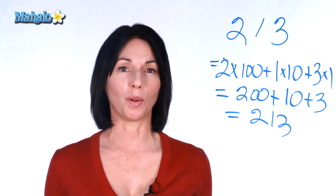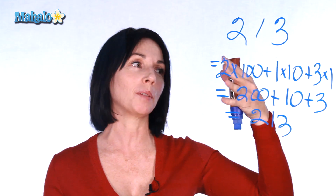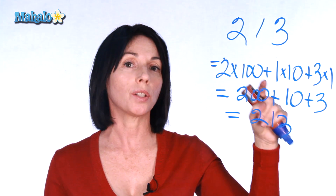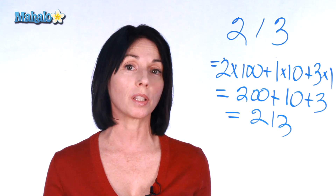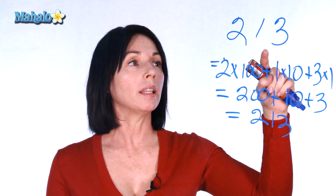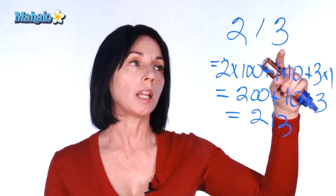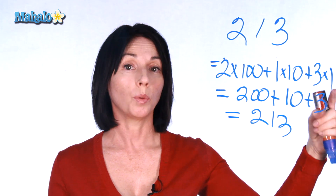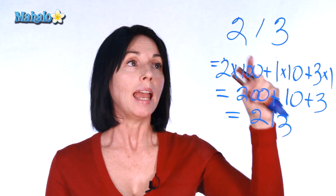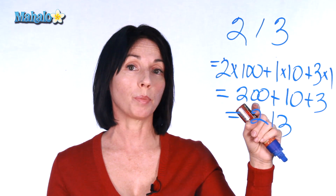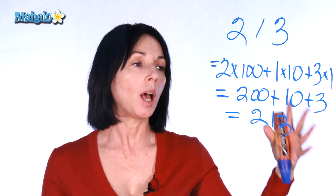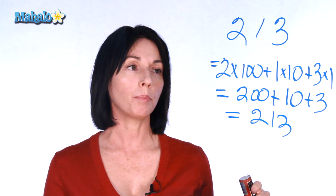Now this might seem like we're going backwards — we have this nice simple number and then we write this complicated thing. But actually this is how we determine how we use whole numbers in our base 10 numbering system. The digit in the ones position is always multiplied by 1, the digit in the tens position is multiplied by 10, and the digit in the hundreds position is multiplied by 100. So those place values help to give you the value of the number.